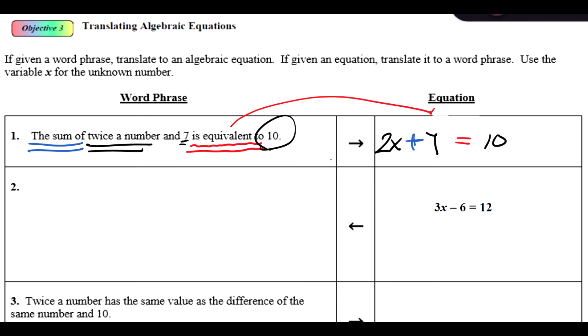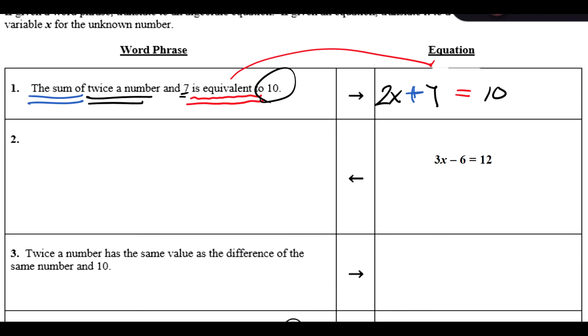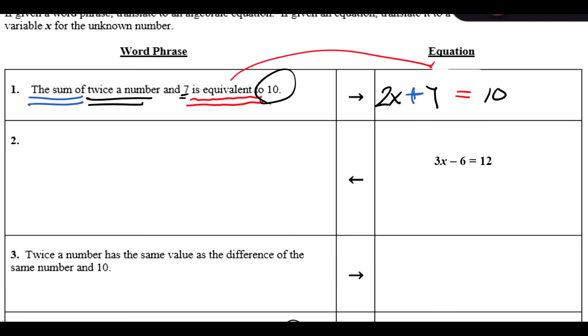So this would be an equation that's translated from there. Now to do this backwards, if I have an algebraic equation, I'm basically going to do this backwards. I'm going to start with the equal sign and translate that back to something like is. The right side is 12, so I know I can put 12 here on the right side. Is 12.